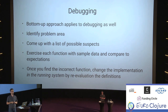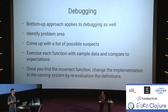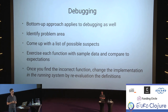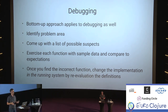I think this applies to debugging as well. When I debug, I usually identify a general problem area, then come up with a list of usual suspects — functions that might be behaving incorrectly. I exercise each function with sample data and compare the results to expectations. At some point I'll realize which function is not doing what it's supposed to. Once you find the incorrect function, you can change the implementation in the running system, just by re-evaluating the definitions.